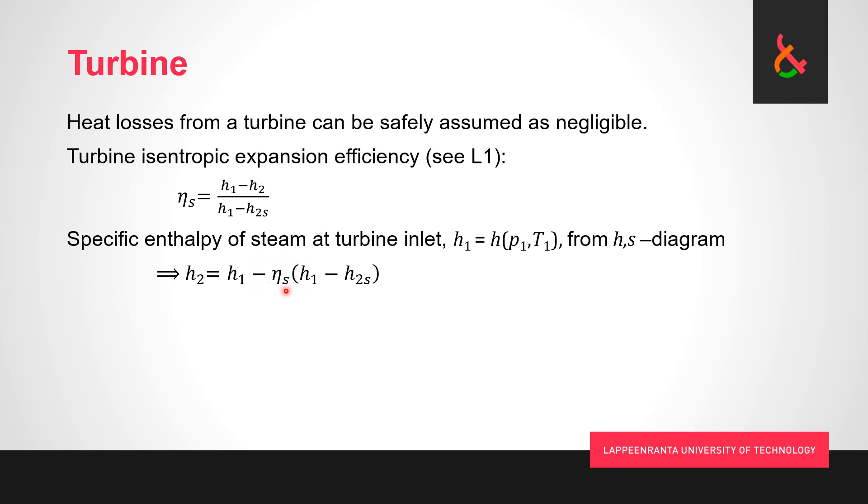This is easy to understand and remember, because what this says is that the enthalpy at point 2 after the turbine is enthalpy at the inlet minus the fraction of theoretically available enthalpy change. We take the fraction indicated by the efficiency, so perfect turbine we get all of that, real turbine we would typically get something like 85 to 90 percent.